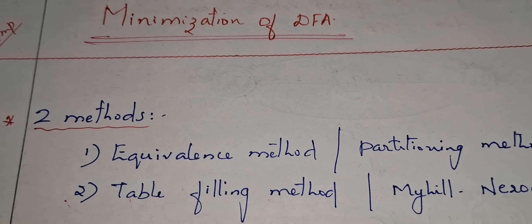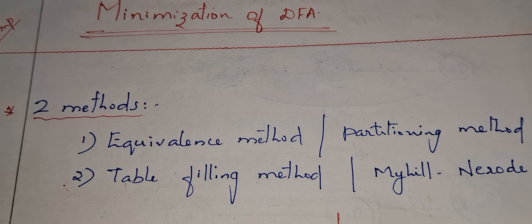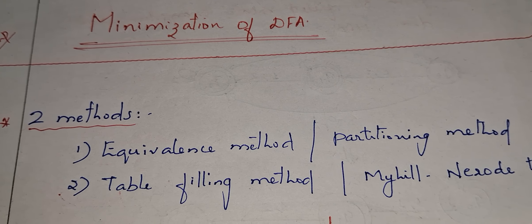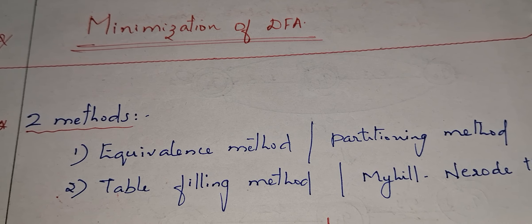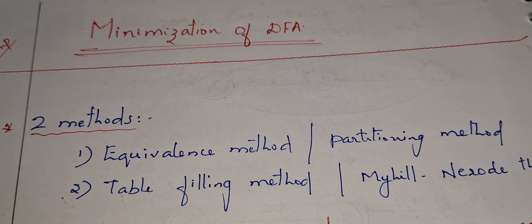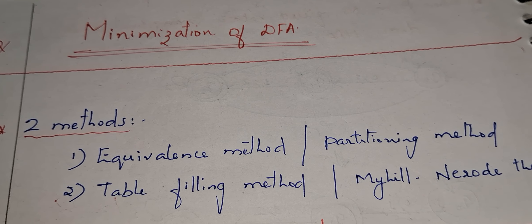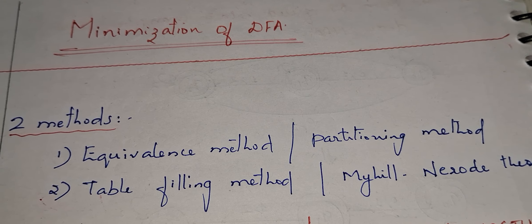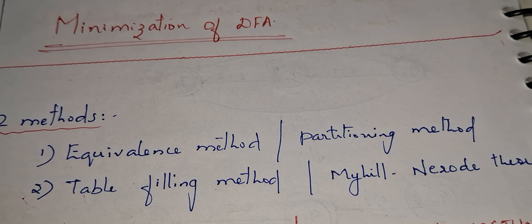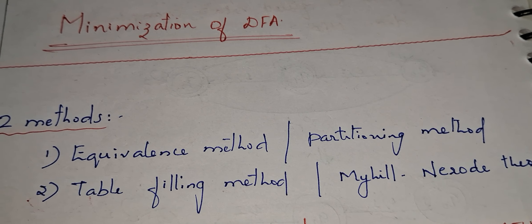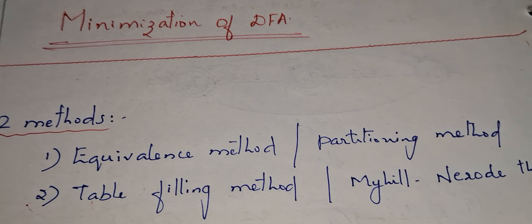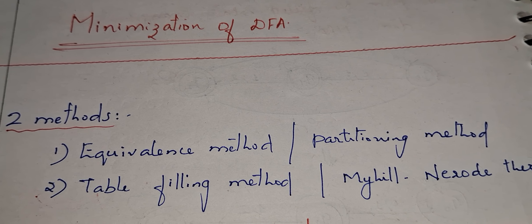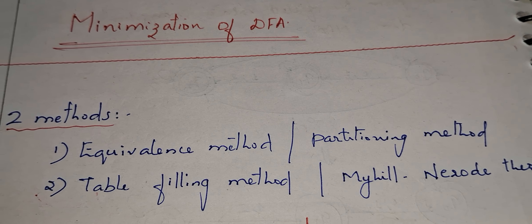In this video I am going to explain you about minimization of DFA — deterministic finite automata. DFA belongs to the category of automata having no output, also called automata without output. So how to reduce the number of states in DFA? That is DFA minimization.